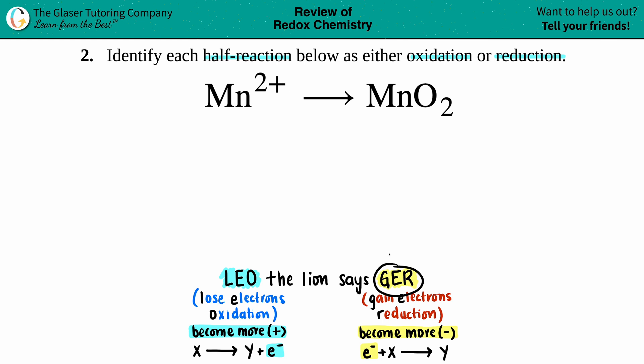On the flip side, GER is the opposite. GER is a gain in electrons - that's reduction. If you're gaining electrons, you're becoming more negative. To show this, the electrons are always on the reactant side or left side of the equation. But the thing is, I don't see any electrons.